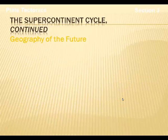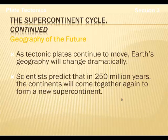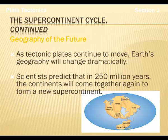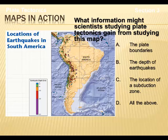Geography of the future. Scientists think that the plates will continue to move as they currently are, and so our geography will change. They predict that in the future, all of the continents may come back together to form a new supercontinent. What information might scientists studying plate tectonics gain from studying this map? Notice the key — is it A, the plate boundaries; B, the depth of earthquakes; C, the location of a subduction zone; or D, all of the above? Please answer this on your note sheet.